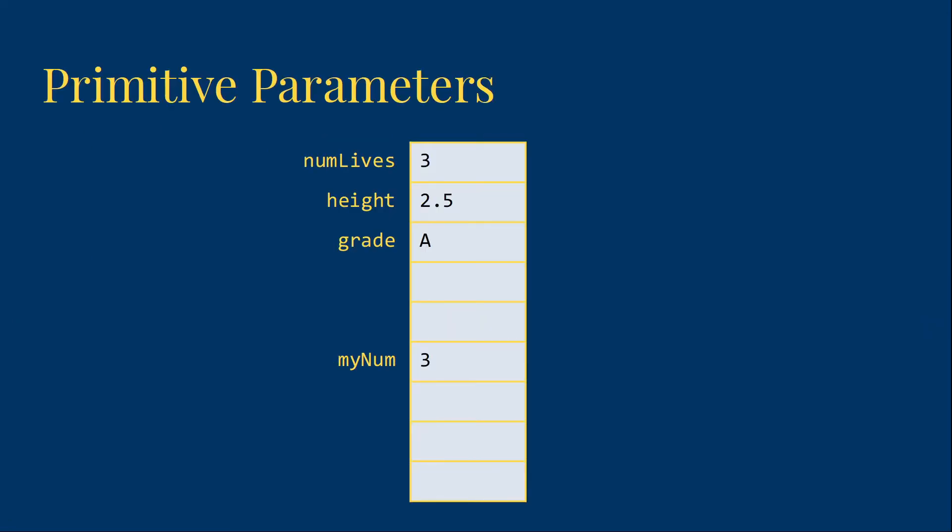So in memory, we'll set aside a separate spot called myNum to hold a copy of the numLives variable. Then as we execute the function and do the myNum++ piece, myNum will change to 4, but numLives won't change.